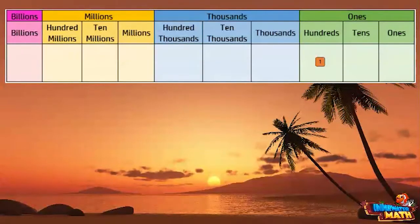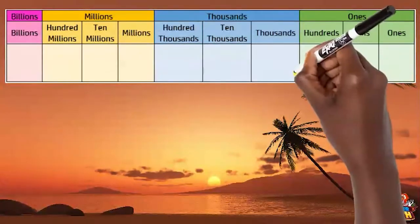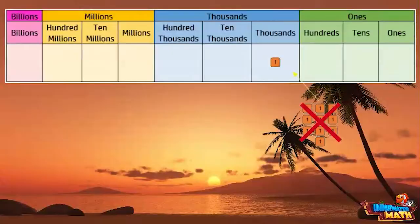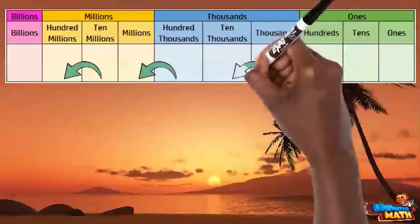We can do the same thing with 10 hundreds, then convert it to 1,000. That one in the thousands place is 10 times greater than a one in the hundreds place because it took 10 hundreds to make that 1,000. The pattern continues on and on this way for every place.